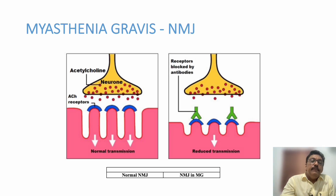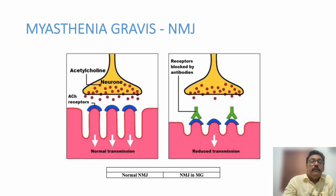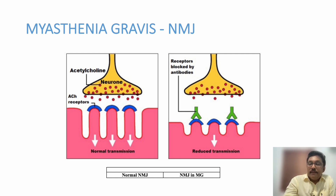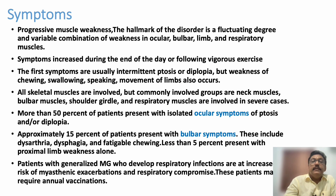In the normal neuromuscular junction, acetylcholine is produced in neuronal endings where receptors are present, and electrical signals pass to the nerve endings to cause neuromuscular transmission. In myasthenia gravis, the receptors are blocked by these antibodies, so there is no transmission and the patient develops muscle weakness.